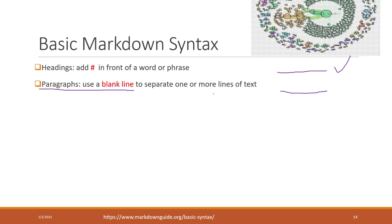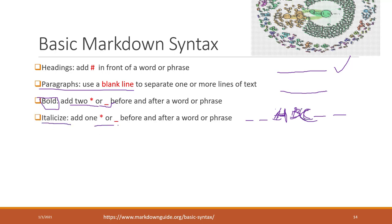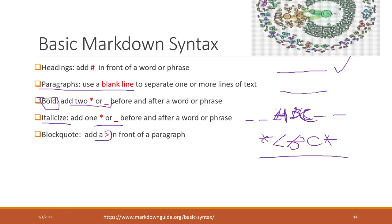You can use two stars or two underscores before and after text to indicate a bold effect. So two underscores, some text like 'a b c', and two more underscores or two stars will make the font bold. You can also use italics by using one star or one underscore surrounding the text.